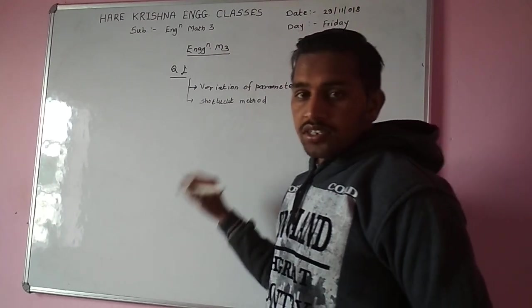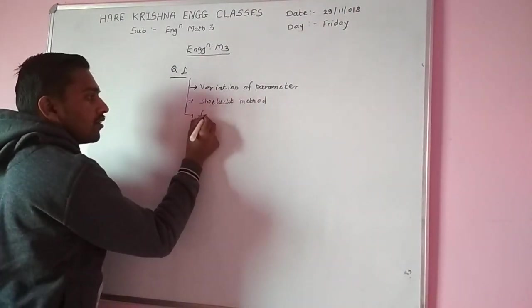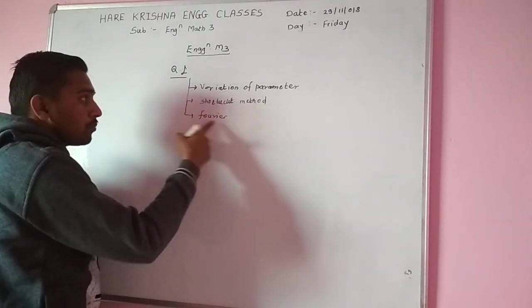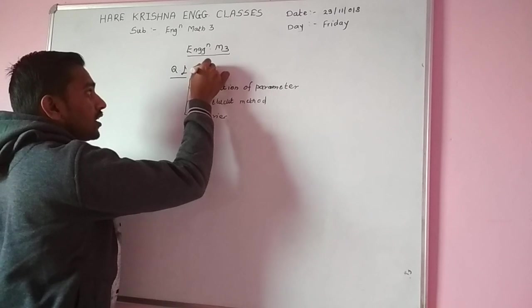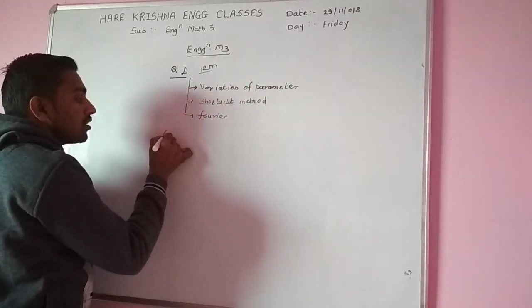Next one is shortcut method, and third last one is Fourier. This is the most important, total weightage is 12 marks.